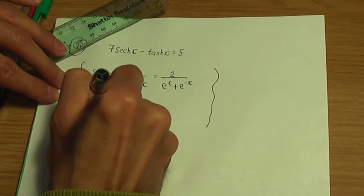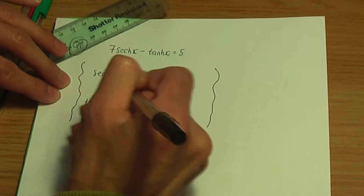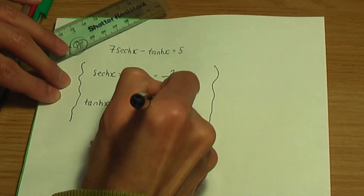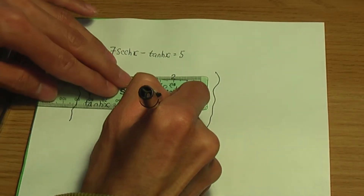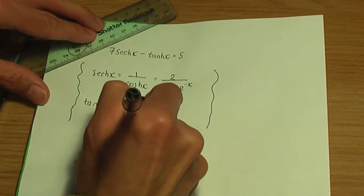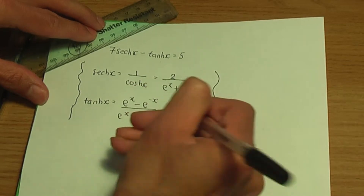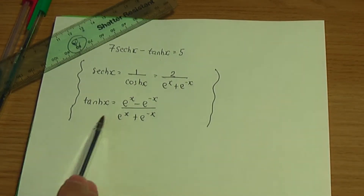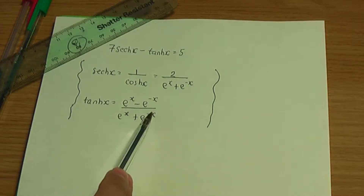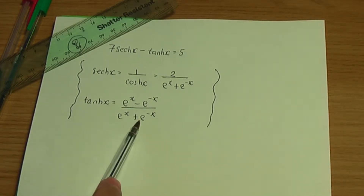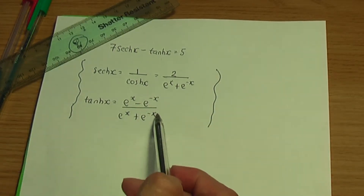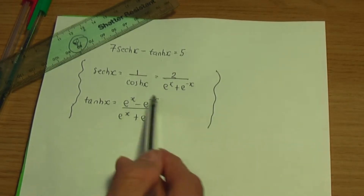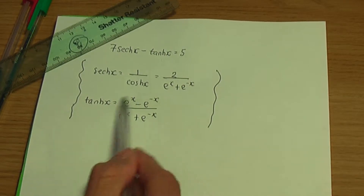Hyperbolic tanh has the definition (e^x minus e^{-x}) divided by (e^x plus e^{-x}). This comes from hyperbolic sinh over hyperbolic cos x, and using the definitions of hyperbolic sinh x and hyperbolic cos x you can derive the definition of hyperbolic tanh x.